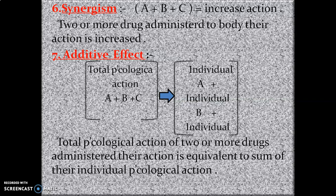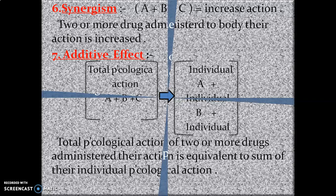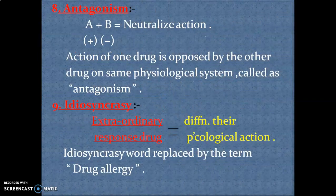Next is the additive effect. When drugs A, B, and C are given individually, the total pharmacological action will be the sum of each drug's pharmacological action — that is A plus B plus C — and that is called the additive effect. In such cases, you need to reduce the dose of the drug.